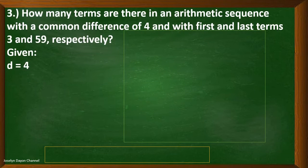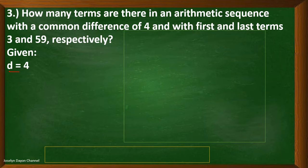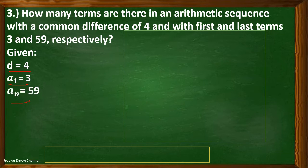Now let's have the third example. How many terms are there in an arithmetic sequence with a common difference of 4 and with first and last terms 3 and 59 respectively? From the given problem, the common difference is 4, the first term is 3, and the last term is 59.